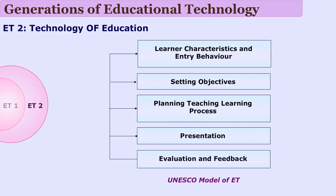How do we implement the software approach? UNESCO has given steps for implementing educational technology. It starts with analyzing learners' characteristics and entry behavior. Accordingly, we set objectives and plan our teaching-learning process in light of these objectives and for the analyzed learners. Then we decide how to present content, plan for evaluation and feedback. This approach is important even when we plan to use technology.